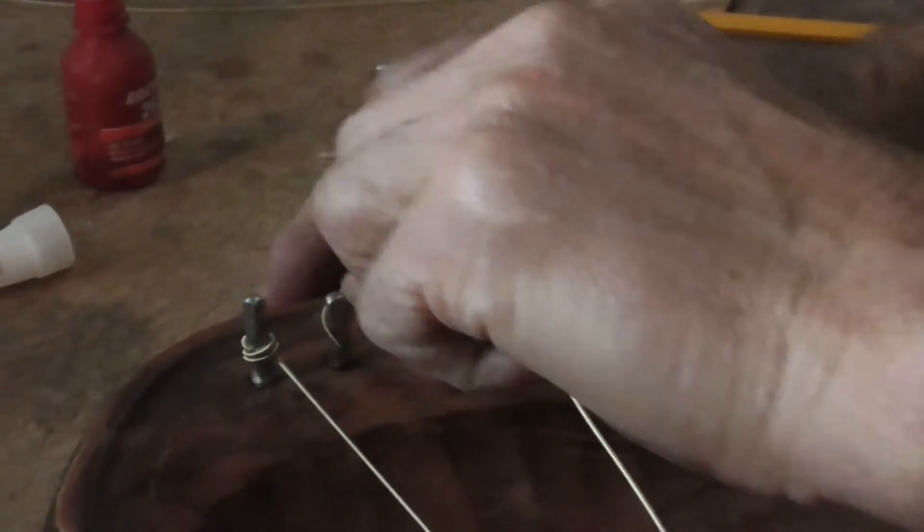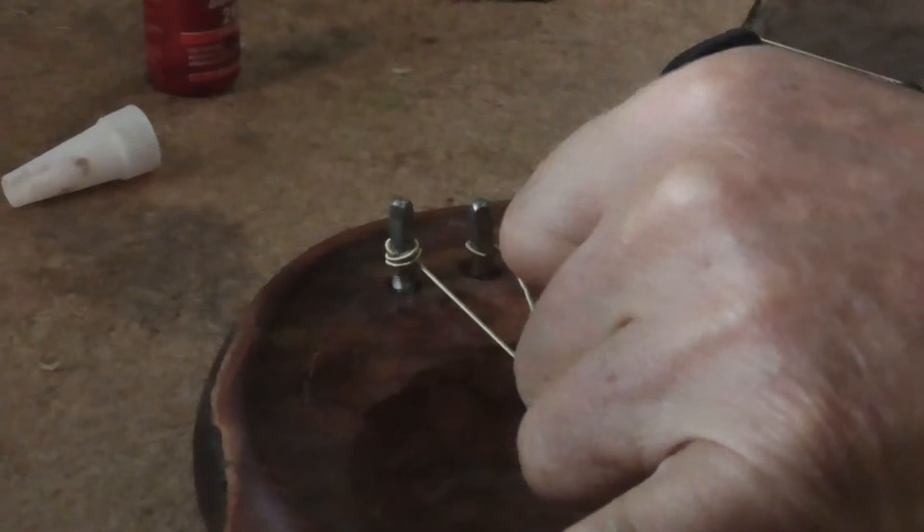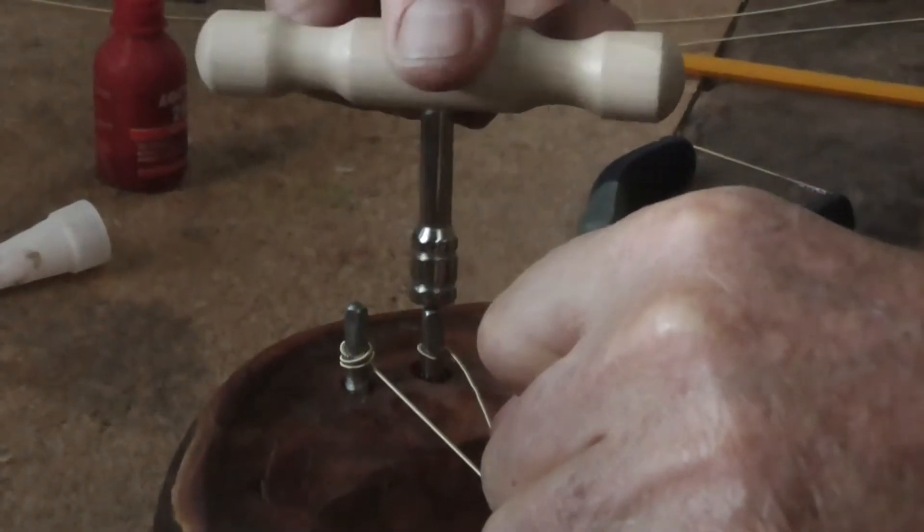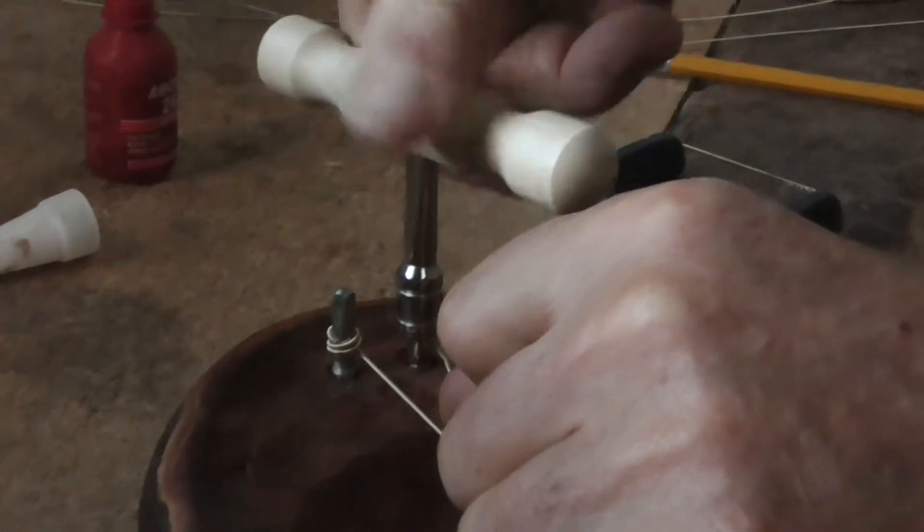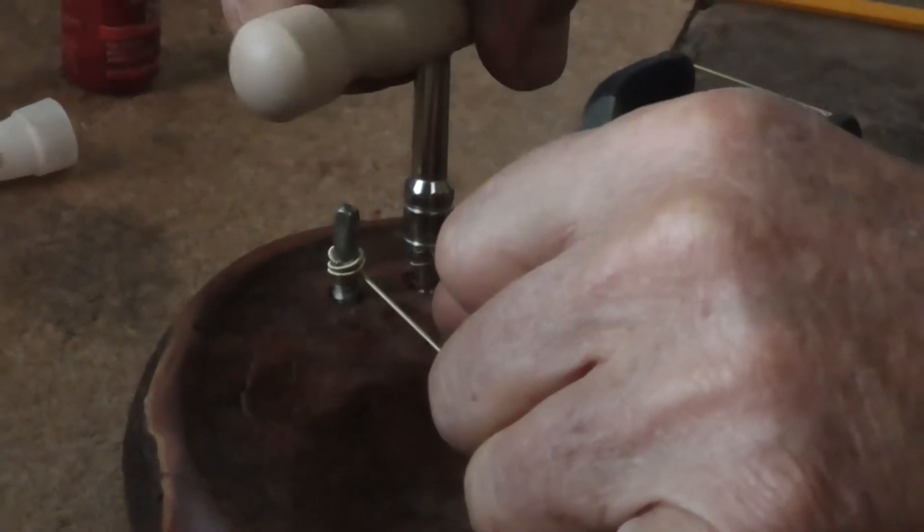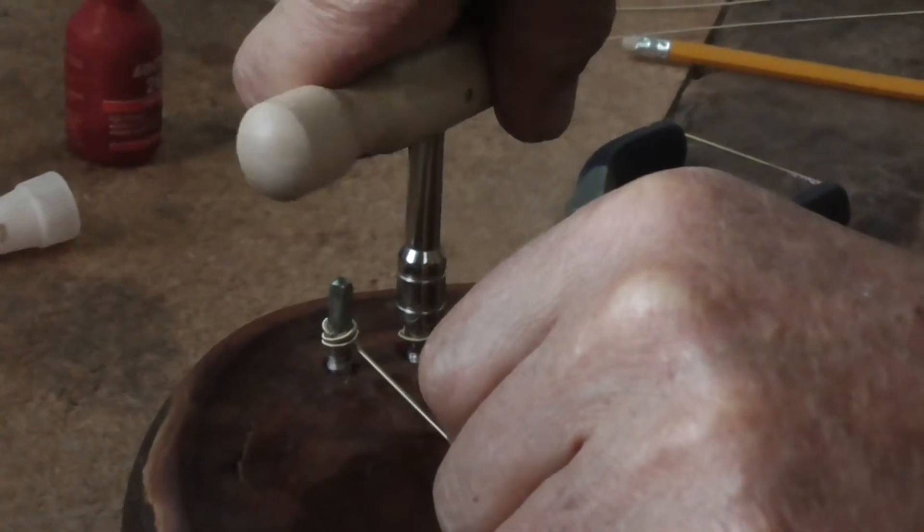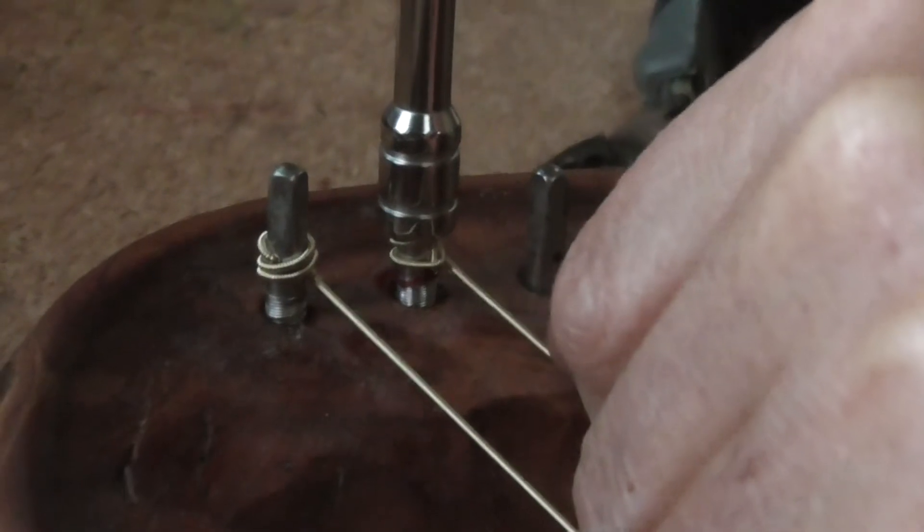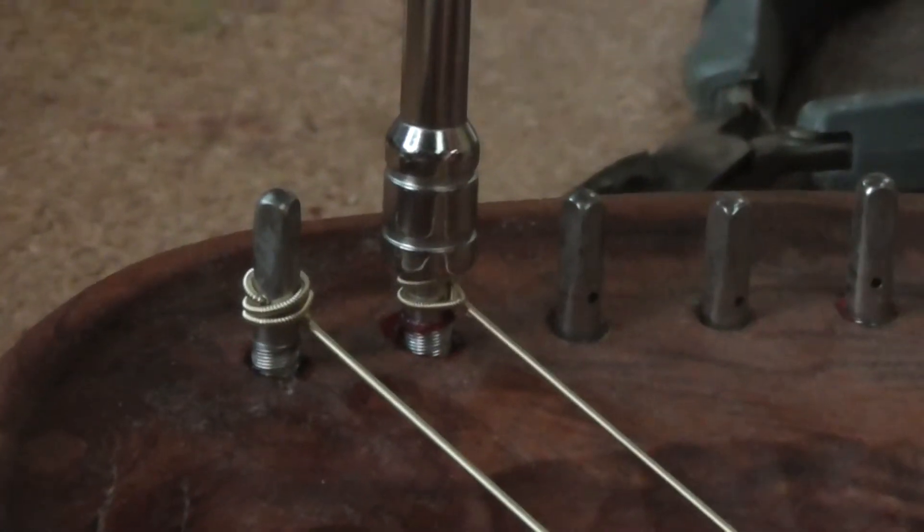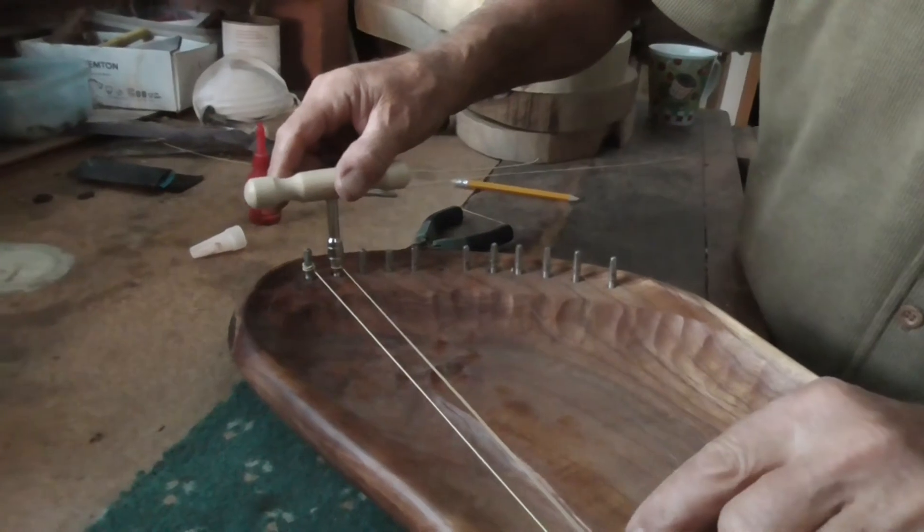Clockwise around the pin just once. Now I'm using my tuning key and turning it anti-clockwise out of the wood, over the little L which we have created, and turning it. Keep going.